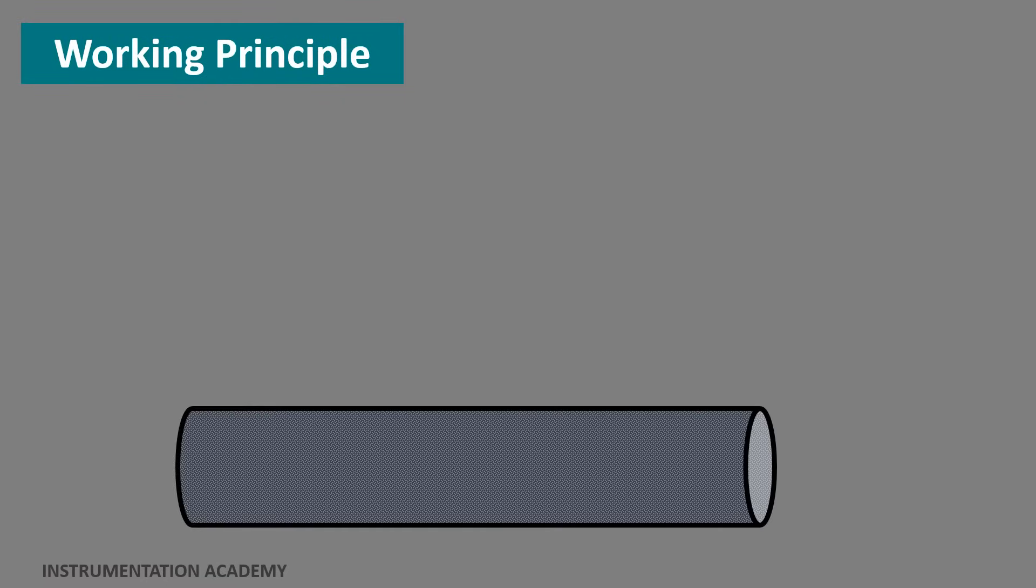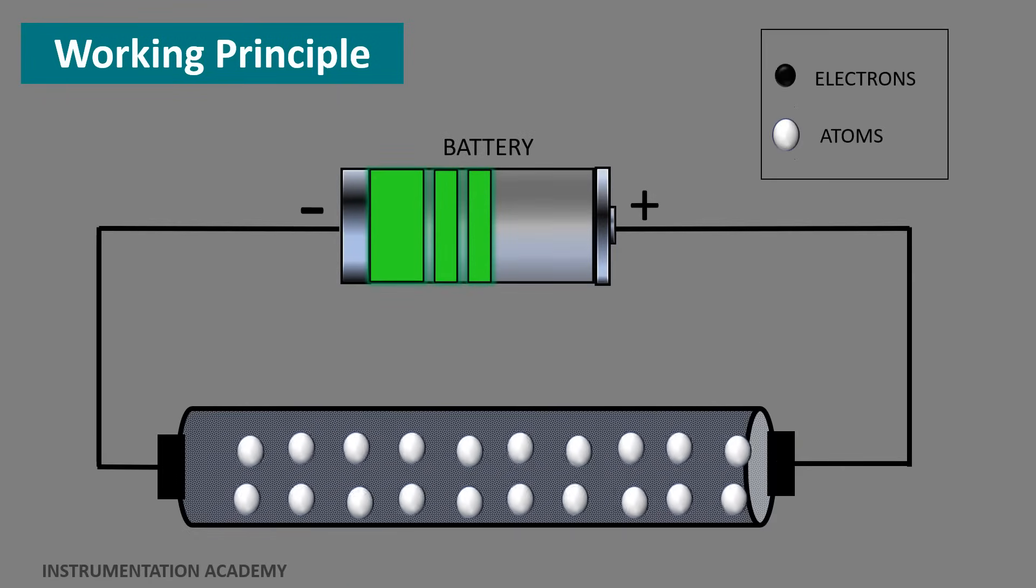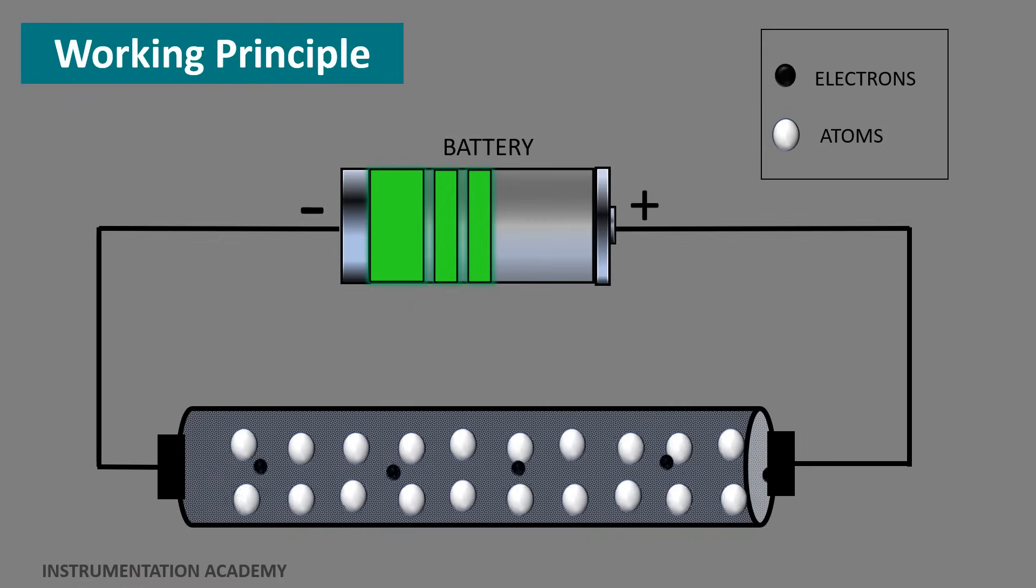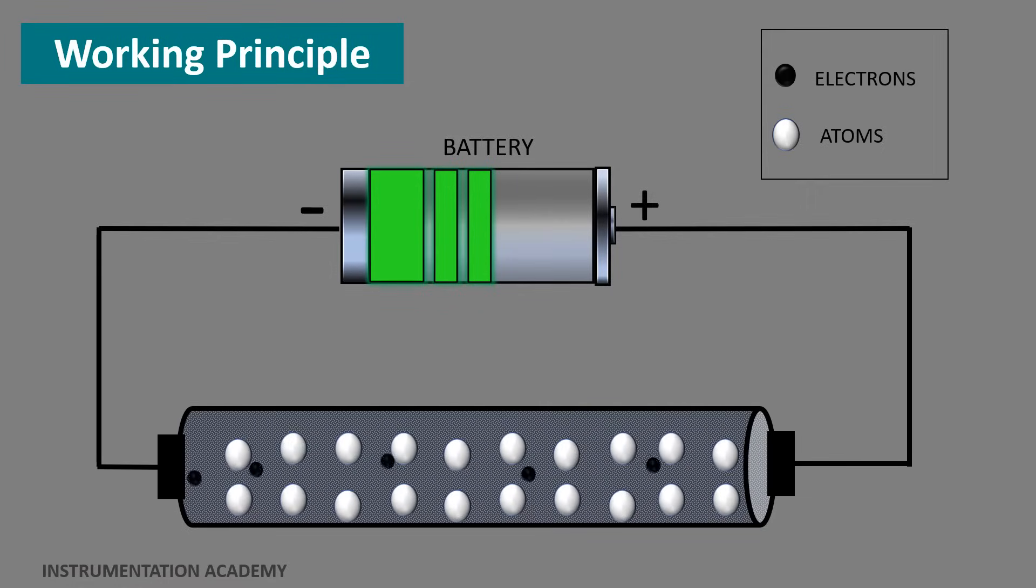Working principle. Every material has atoms in it and all atoms have some energy due to which it vibrates slightly. When a battery is connected to a conductor, current flows through the conductor. Since the flow of current is due to the flow of electrons, these electrons frequently collide with vibrating atoms of the conductor. These collisions decrease the speed of the electrons. This property of a material due to which it opposes the flow of current through it is called resistance.